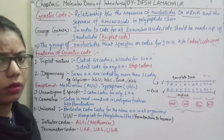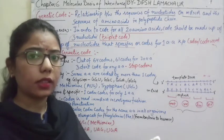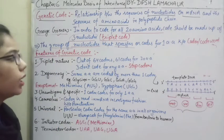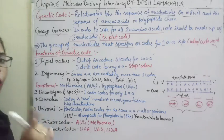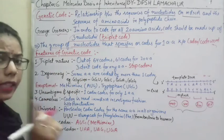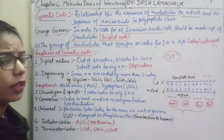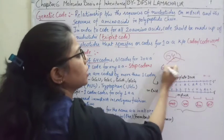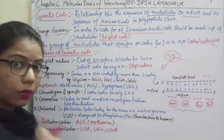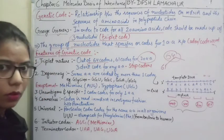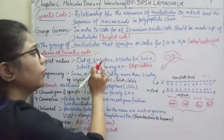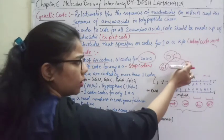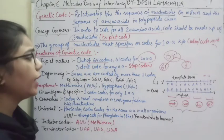What are the features of this genetic code? The first one is its triplet nature. It is made up of three nucleotides for each amino acid. With this arrangement, we are getting 64 combinations. Out of the 64 codons, 61 code for the 20 amino acids, because we need to code for only these 20 amino acids.